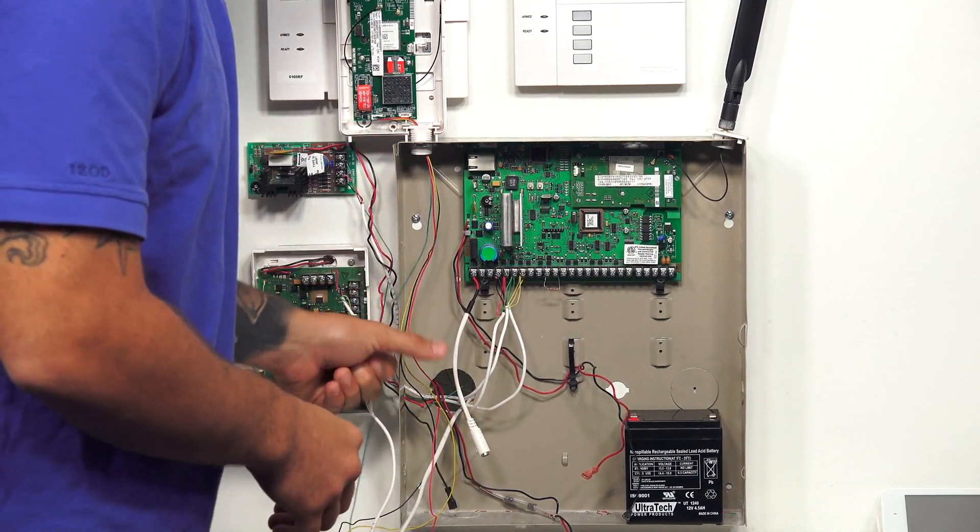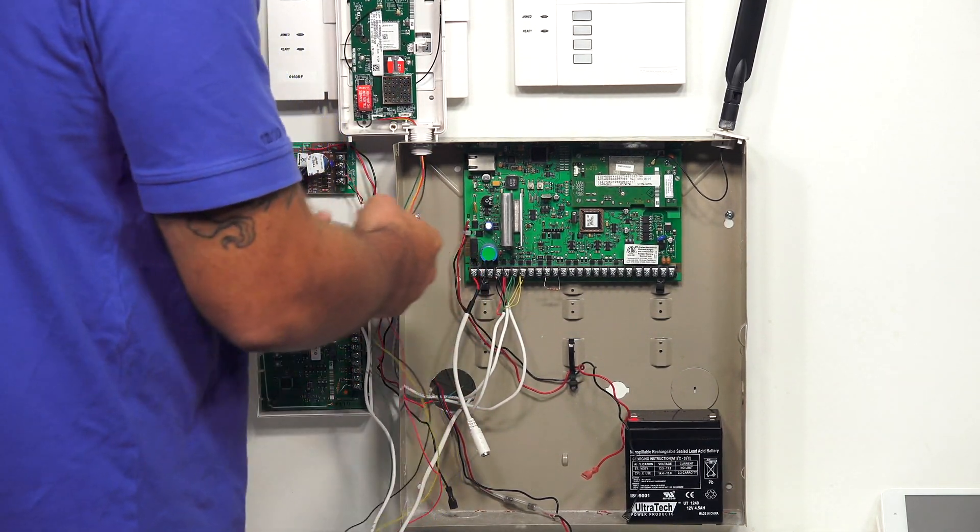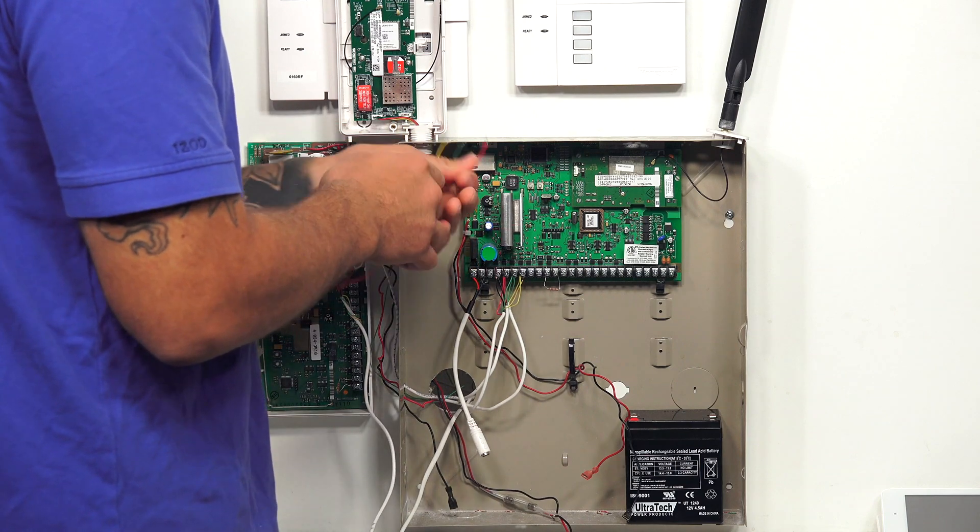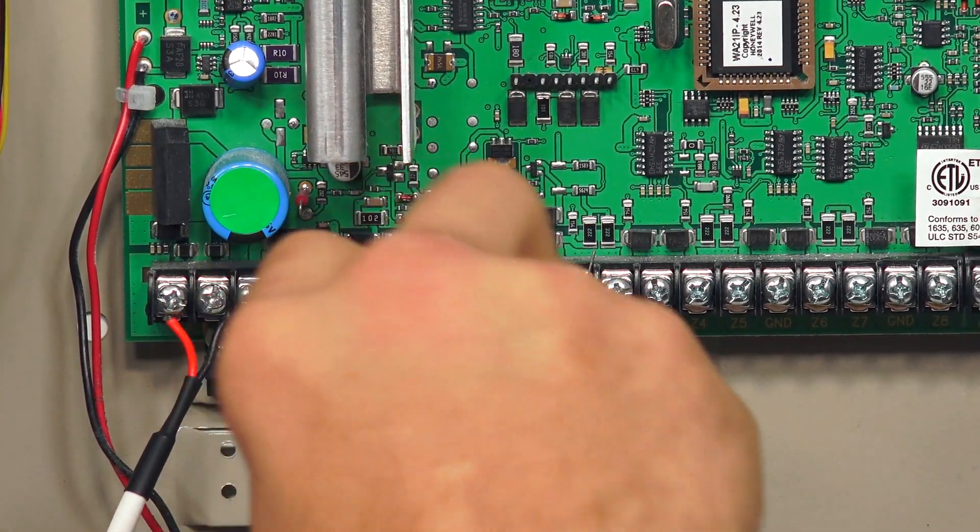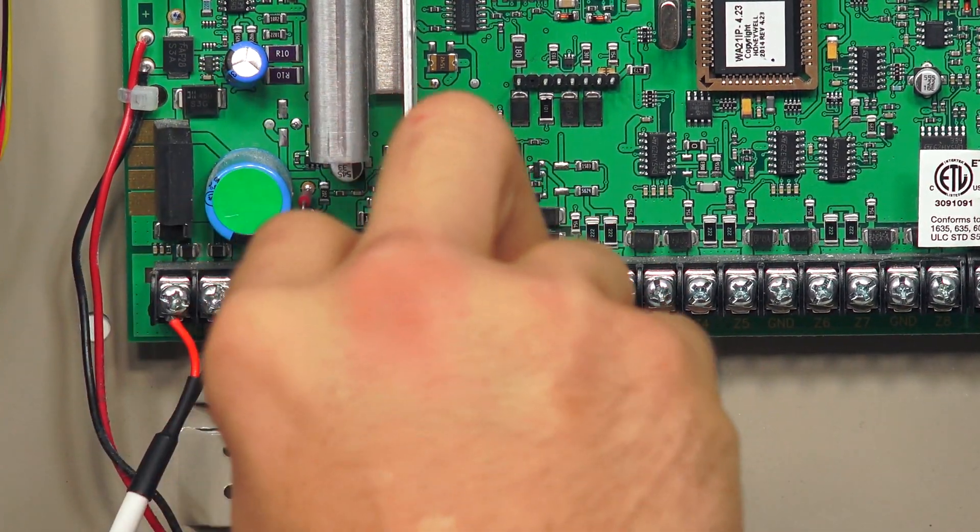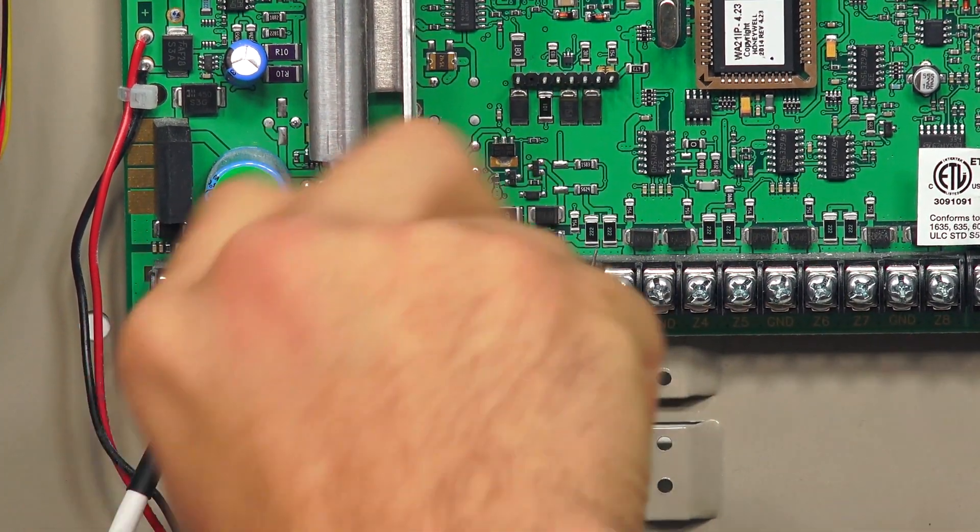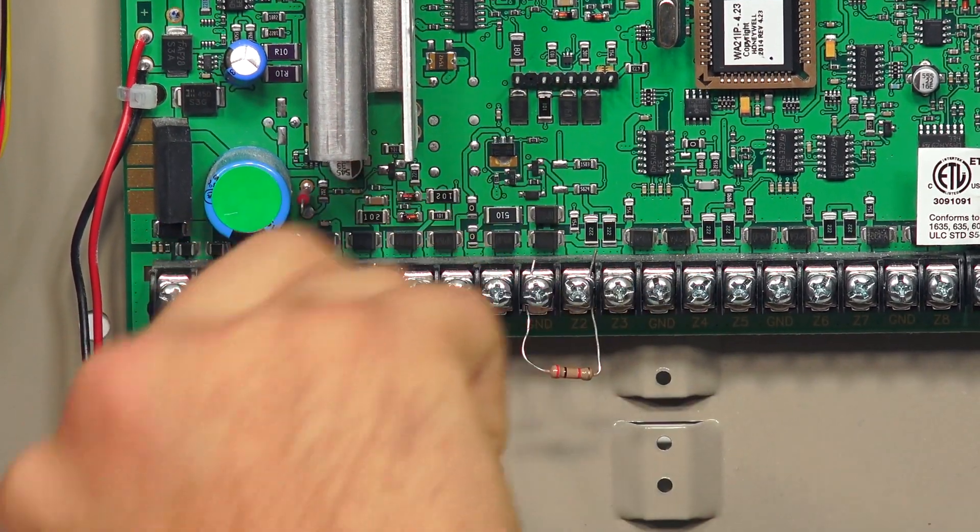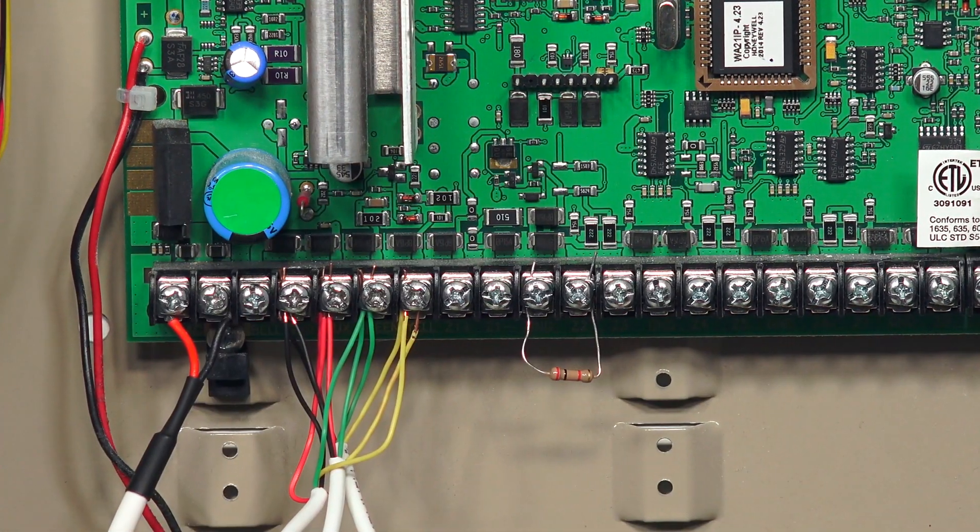All right, so our communicator is set and stable. Now I have to attach the wires to the ECP bus. So as you can see, we do already have some wires on our ECP bus. I'm just going to loosen up these terminals and slip the communicator wires right underneath.